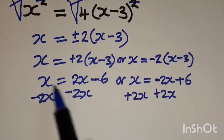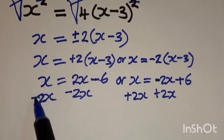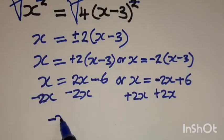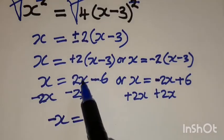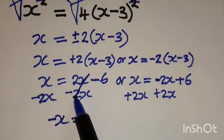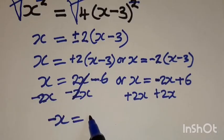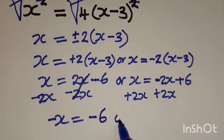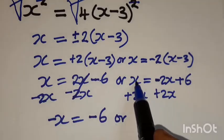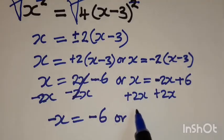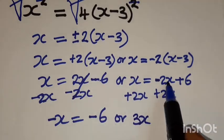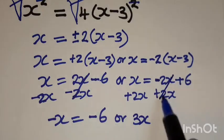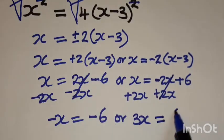So here on the left, we are going to remain with x minus 2x is negative x. It's equal to 2x minus 2x. This becomes a 0, negative 6. Or x plus 2x is 3x. Then negative 2x plus 2x. This becomes a 0 and is equal to 6.